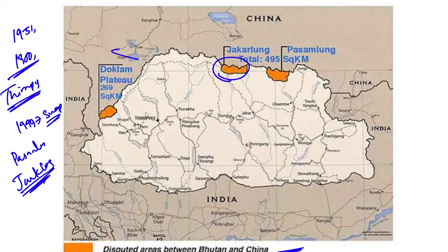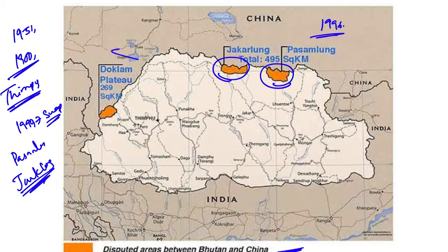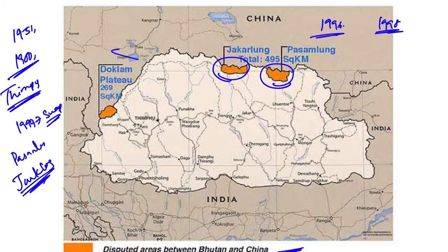The disputed points include Jakarlung and Pasamlung. Even though Bhutan was initially believed to be inclined to take the deal, it soon changed course. In 1996, Thimphu's negotiators returned to the table with claims to the western enclaves that were more expansive than those made earlier. Curiously, Beijing alleged that India was behind this about-turn. Though both countries signed a 1998 agreement committing them to maintain the status quo, the actual border talks rapidly broke down around Bhutan's new claims in Doklam.